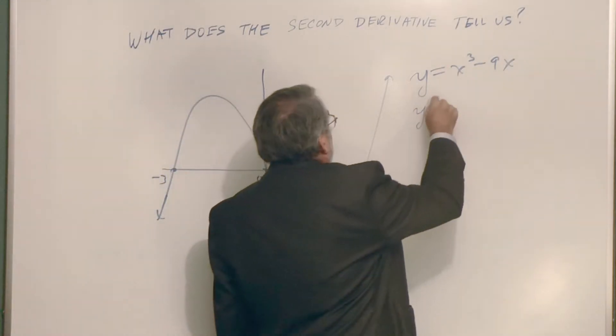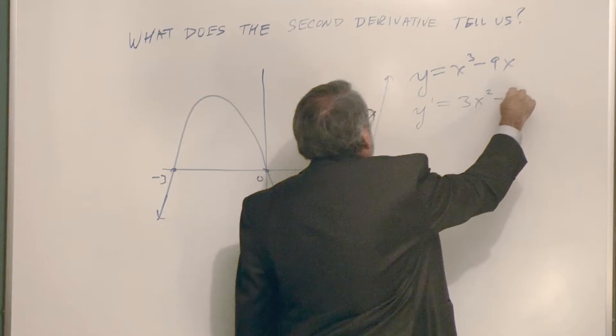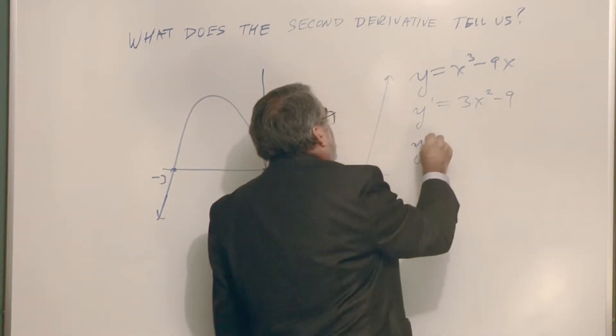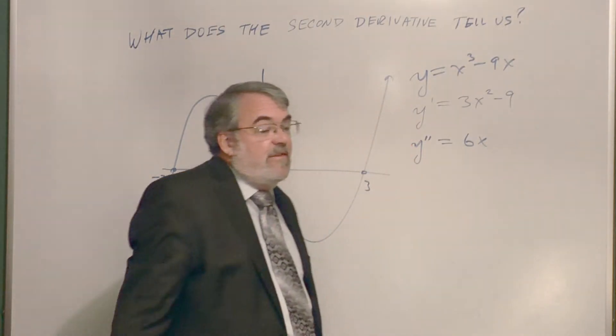Now, we first have to get the first derivative. This derivative is 3x squared minus 9. And then the second derivative, it's going to be 6x plus zero. So, just 6x.